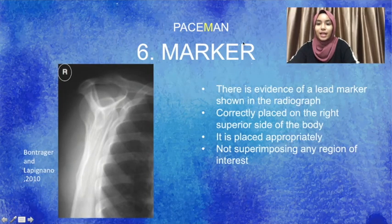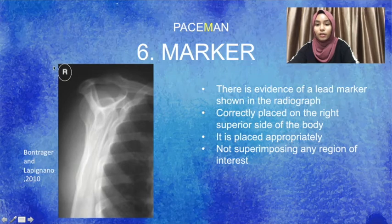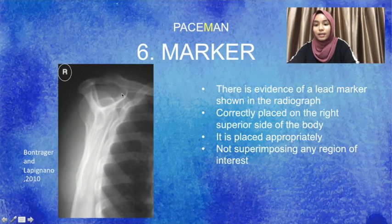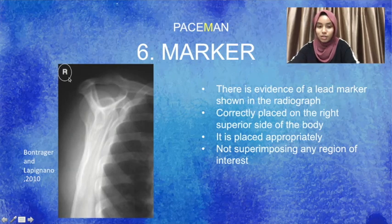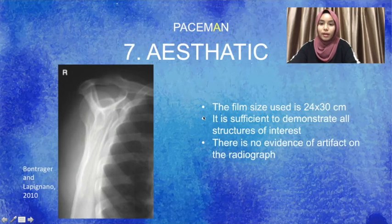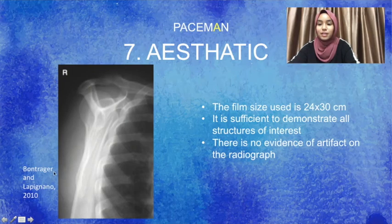Moving next is the marker. There is evidence of an anatomical lead marker shown in the radiograph. It is correctly placed on the right superior side of the body and is placed appropriately without superimposing any region of interest.